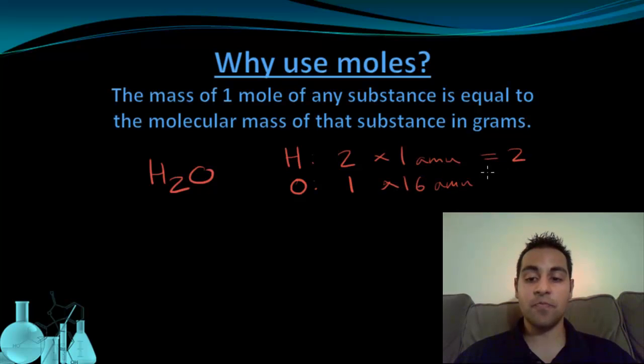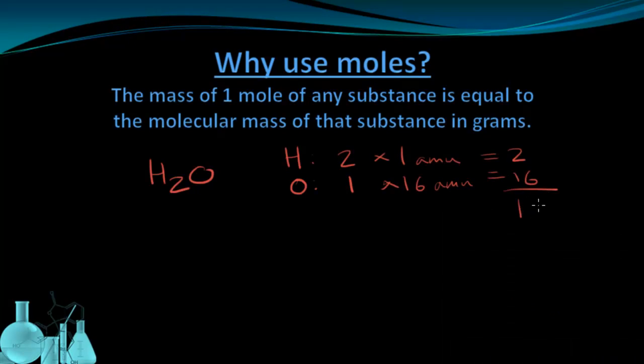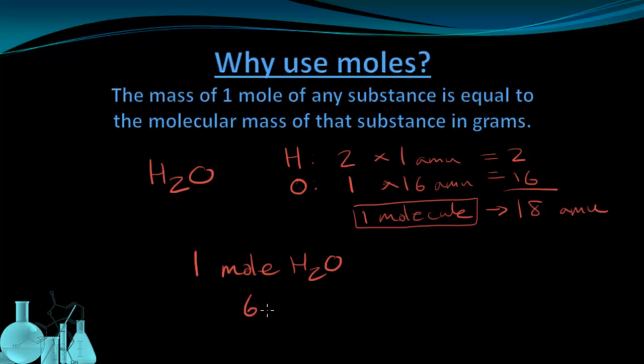I can now multiply these out and add them up. And this is going to tell me that my molecular mass, the mass of one molecule, is 18 AMUs. If I now look at one mole of water, which is 6.022 times 10 to the 23rd molecules of water, according to this relationship, the mass is 18 grams.